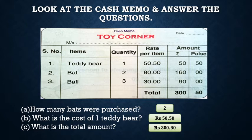Then add this total amount. In paise we have 50 paise. Adding 50 plus 160 plus 90, we get 300. So total amount is 300 rupees 50 paise.